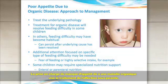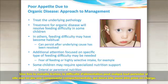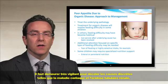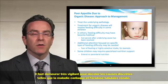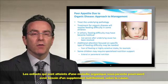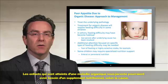The management of poor appetite due to organic disease consists of treatment of the underlying pathology. However, the feeding difficulty may persist even after treatment if there is a secondary behavioral component, in which case this must be treated as well. Maintain a high index of suspicion for subtle underlying causes such as celiac disease and renal tubular acidosis. Children with underlying organic pathology may require a nutritional supplement depending on the underlying cause.